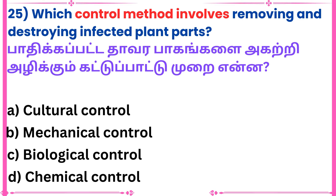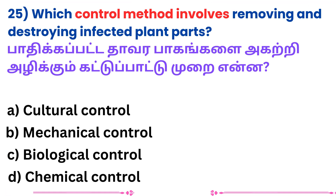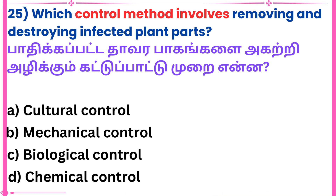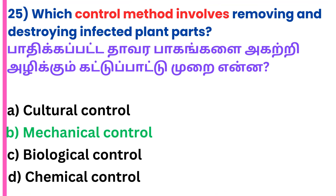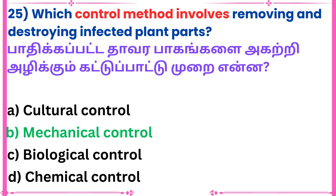Question 25: Which control method involves removing and destroying infected plant parts? Answer: Mechanical control.